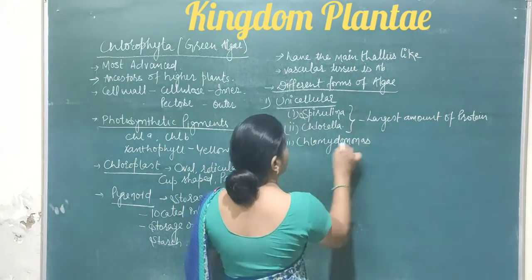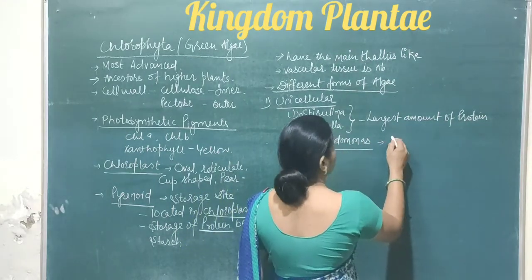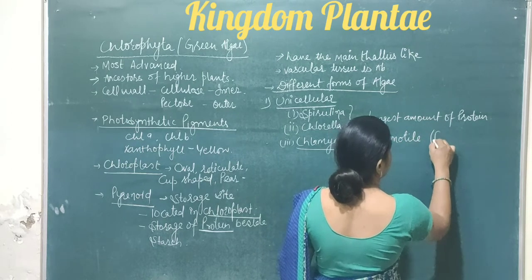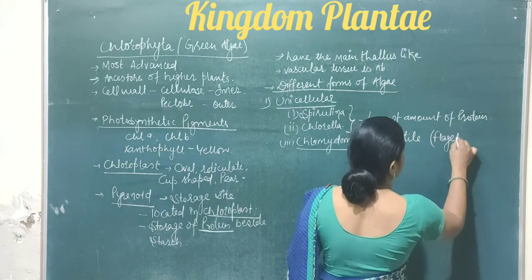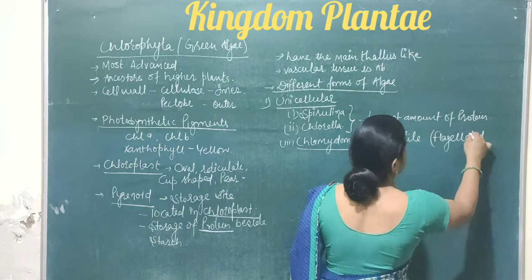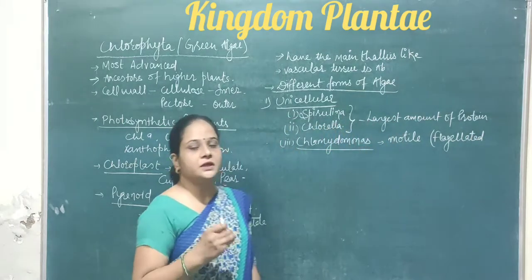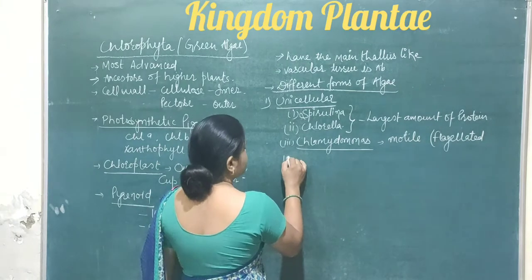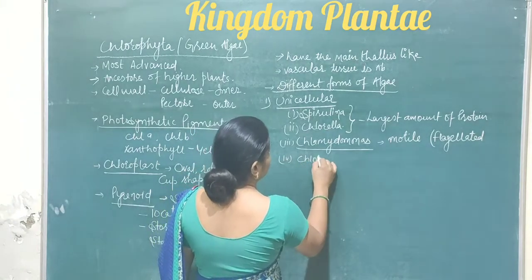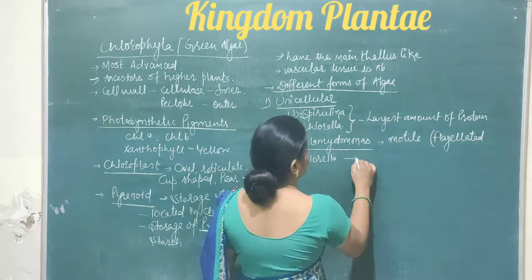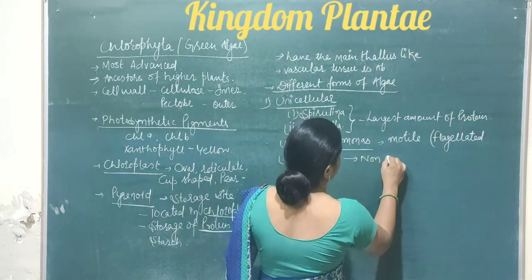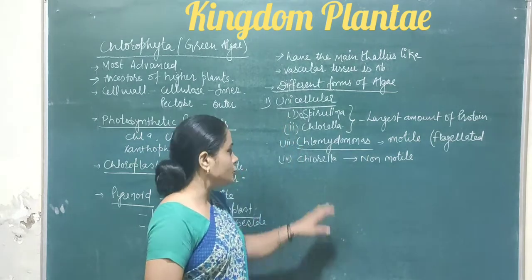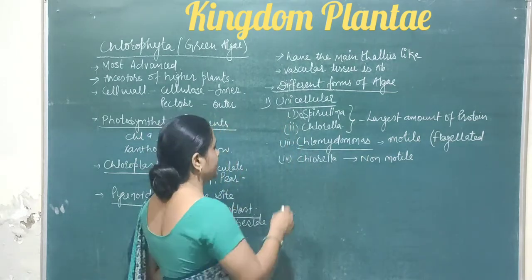The second unicellular form is Chlamydomonas. Chlamydomonas is a unicellular and motile alga — motile means it has a flagellated structure, with flagella for movement from one place to another. Chlorella, by contrast, is non-motile, meaning flagella are not present.